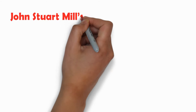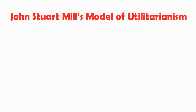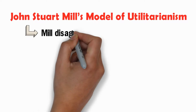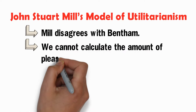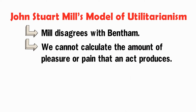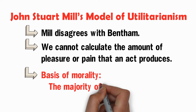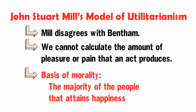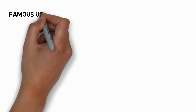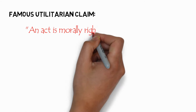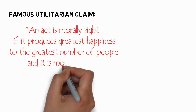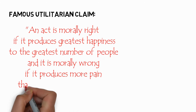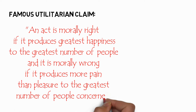Now let us proceed to John Stuart Mill's model of utilitarianism. It is important to note that Mill disagrees with Bentham. Mill argues that we cannot calculate the amount of pleasure or pain that an act produces, and thus the philosophic calculus cannot be the basis of morality. Instead, the basis is the majority of people who attain happiness. An act is morally right if it produces the greatest happiness to the greatest number of people, and morally wrong if it produces more pain than pleasure to the greatest number of people.